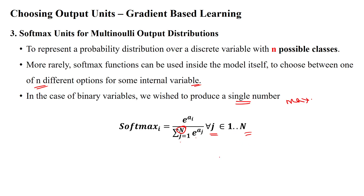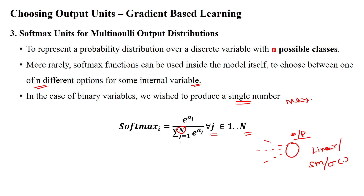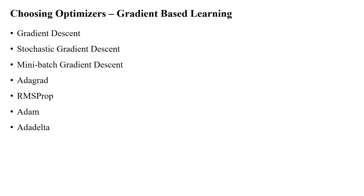When building a neural network, the output layer will have hidden layers, and in the output layer we must choose the right output units — either linear, sigmoid, or softmax — to get suitable accuracy for the given problem statement.